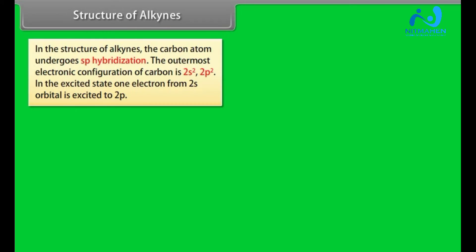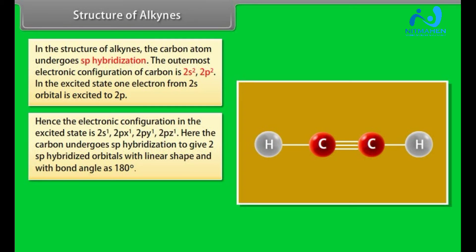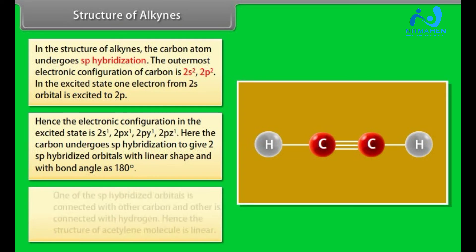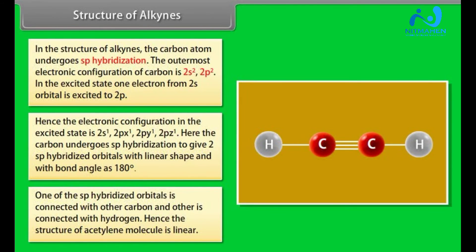Structures of alkynes. In the structure of alkynes, the carbon atom undergoes SP hybridization. The outermost electronic configuration of carbon is 2S2-2P2. In the excited state, one electron from 2S orbital is excited to 2P. Hence, the electronic configuration in the excited state is 2S1, 2PX1, 2PY1, 2PZ1. Here, the carbon undergoes SP hybridization to give two SP hybridized orbitals with linear shape and with bond angle as 180 degrees. One of the SP hybridized orbitals is connected with other carbon and other is connected with hydrogen. Hence, the structure of acetylene molecule is linear.